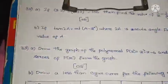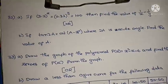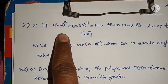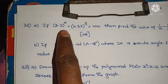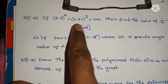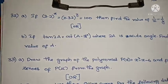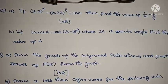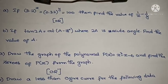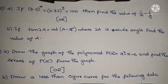The 32nd question: If 3.2 to the power of x equals 0.32 to the power of y equals 100, then find the value of 1/x minus 1/y.